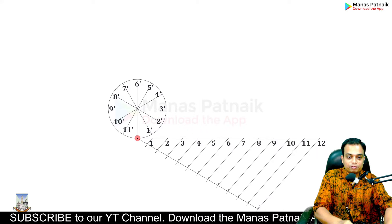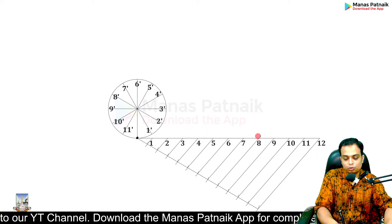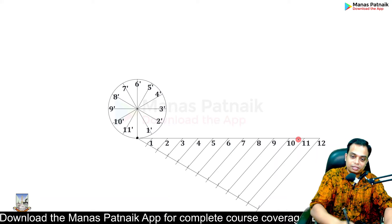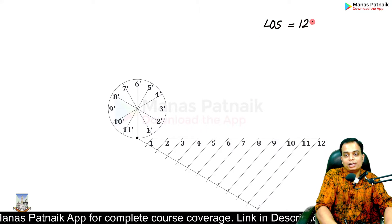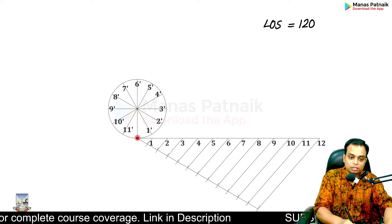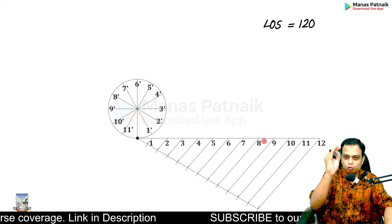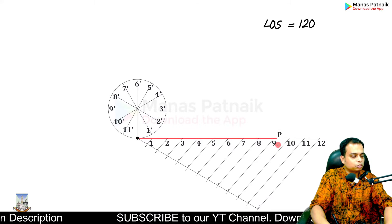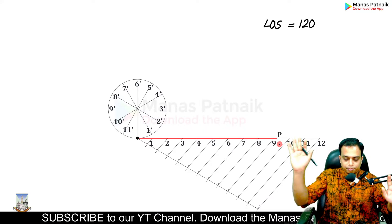Now comes a very important point. What was your length of the string? One end of the string has to be fixed here while the other end is going to be somewhere on the divided line. The length of the string is 120 millimeters, so keep the zero of your scale at the start point and at a distance of 120 millimeters mark a point. It falls just beyond point nine on the divided line.